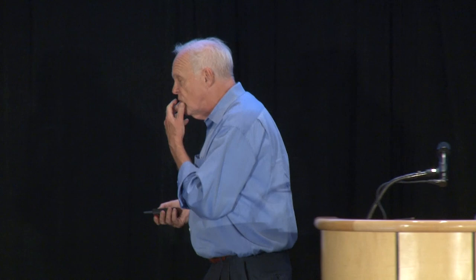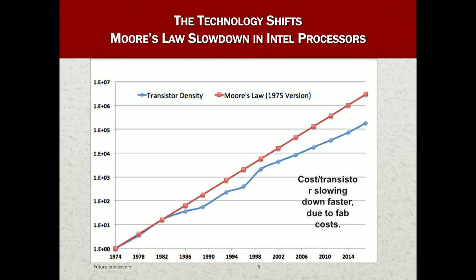Looking at Moore's Law using Intel microprocessors as a benchmark, we're off by a factor of 10x from the original prediction, but that's a drop in the bucket compared to six orders of magnitude of progress. The big differential began around 1998, but Moore's Law isn't hitting a dead stop — it's slowing down and fab costs are going up. We are, however, much closer to dead in the water on Dennard scaling.